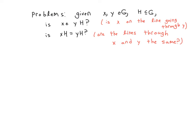One question you might ask, given a subgroup of G and two elements in G: is X in the coset generated by Y, and do they generate the same coset? In terms of the analogy with parallel lines, this is similar to asking whether X is on the line through Y parallel to H, or whether they're the same line. These are actually the same question, and at the level of cosets for abstract algebra, they also have the same answer.